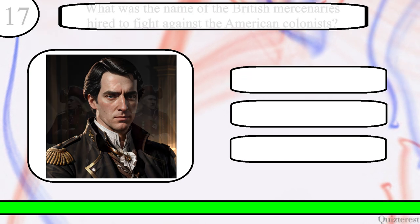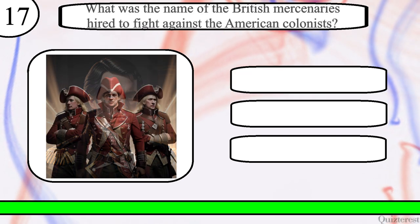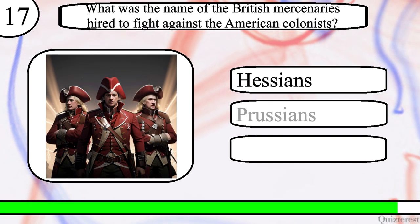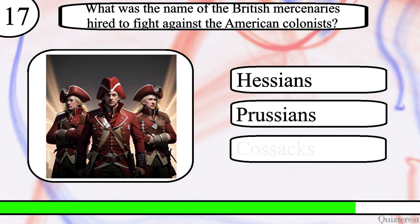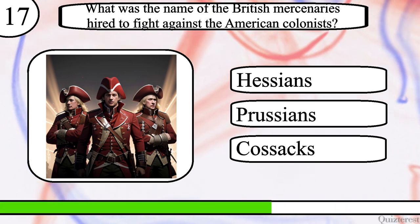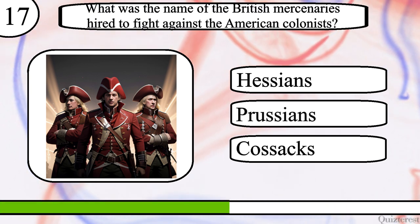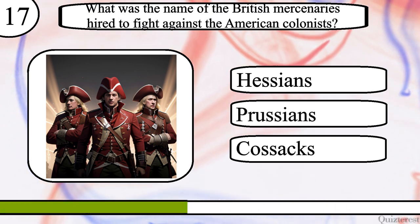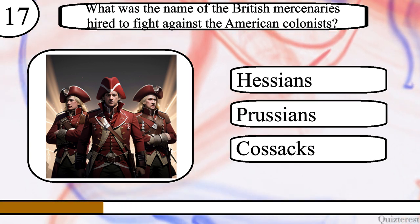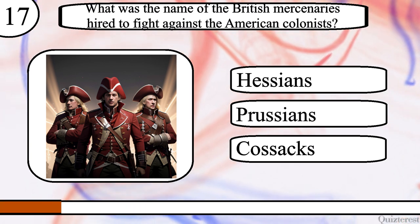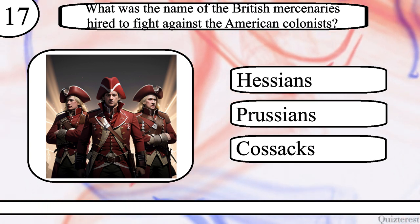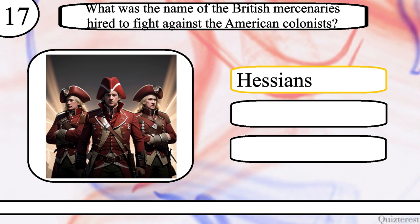Question 17. What was the name of the British mercenaries hired to fight against the American colonists? Hessians, Prussians, or Cossacks? The correct answer is Hessians.